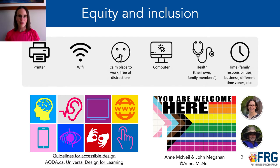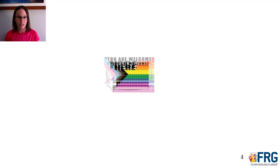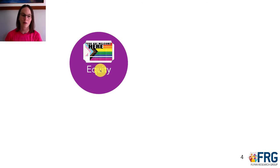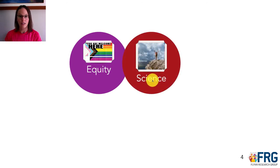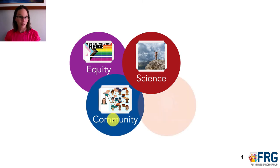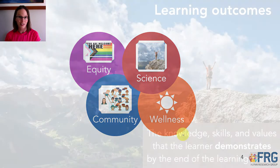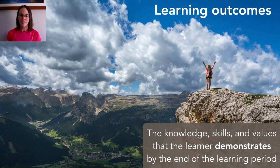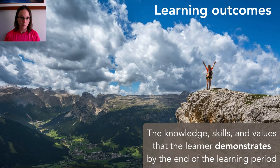To think about how we build equity and inclusion into organic chemistry, let's look at some of the pillars I'm using as I design this course. You already know about the equity pillar, but also very important is the science itself — the organic chemistry. We're also going to look at how we build community within the course and how we take care of our wellness as we go through this fall of remote teaching and learning. Speaking to the learning outcomes first: that's the knowledge, skills, and values that you as the learner will demonstrate at the end of the learning period, and you'll find those listed in the syllabus. All the videos, course components, quizzes, and tests are aligned with those intended learning outcomes.